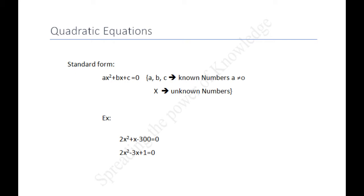For example, 2x squared plus x minus 300 equal to 0, or 2x squared minus 3x plus 1 equal to 0. That is, any equation of the form P(x) equal to 0 where P(x) is a polynomial of degree 2 is a quadratic equation, and we should write it in descending order of degrees to get the standard form Ax squared plus Bx plus C equal to 0, where A is not equal to 0.